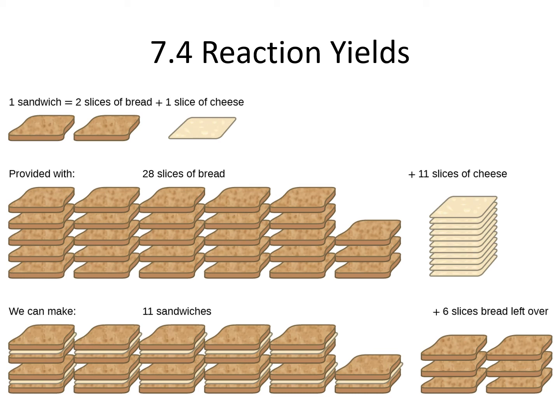We've talked about stoichiometry, which tells us the relationship between different parts of a chemical reaction. A chemical reaction is basically an assembly line where atoms get taken apart from each other and put together in different ways that are highly defined. How much we put into the reaction is going to determine how much we're able to get out, just like when we're baking something in the kitchen or making sandwiches.